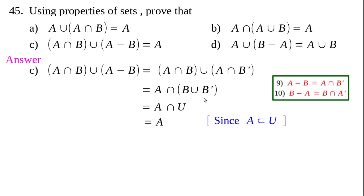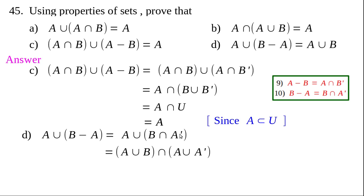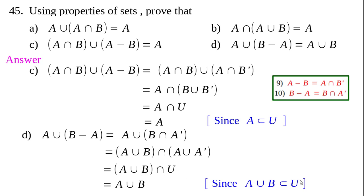Part (d): A∪(B−A) = A∪B. Replace B−A with B∩A'. By the distributive law, A∪(B∩A') = (A∪B)∩(A∪A') = (A∪B)∩U. Since A∪B ⊂ U, the intersection equals the smaller set A∪B. Therefore A∪(B−A) = A∪B. All four results have been derived using properties of sets. Answer to question 45 is over.